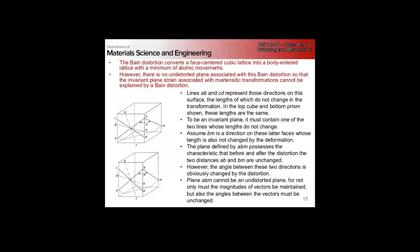This argument is somewhat convoluted — I want to go through it, but don't spend a lot of time on the geometry. This is not going to be an exam question. We want to show that the Bain distortion does not leave an undistorted plane. So let's imagine we have a Bain distortion that converts the FCC lattice into a body-centered lattice — the Bain distortion is our minimum of distortion.